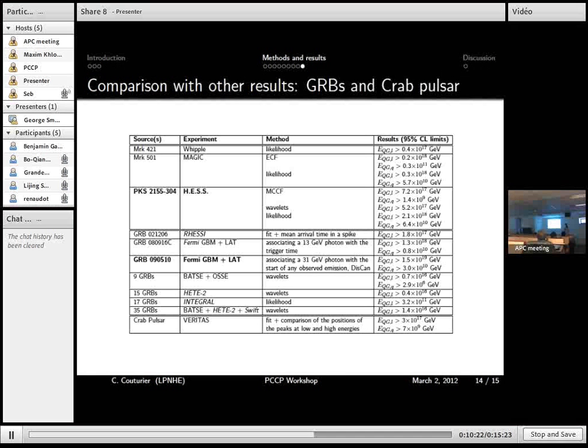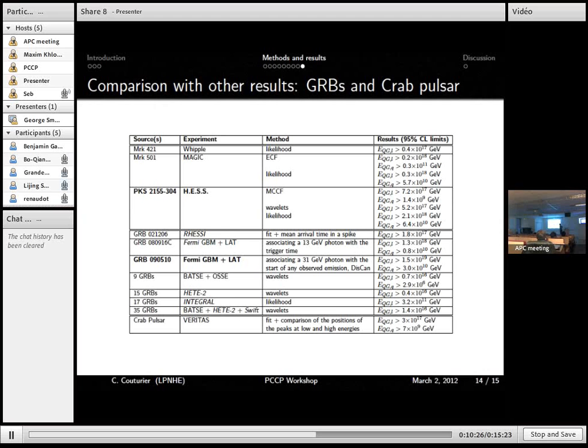Here is a table to summarize the results obtained with AGNs and to compare them with results obtained with gamma-ray bursts, in particular with Fermi, which is a detector on the satellite. I wanted to point out that the results obtained with AGNs are very competitive with the best results so far obtained with Fermi.